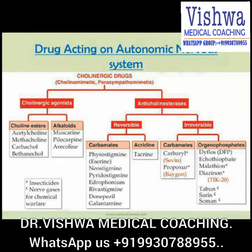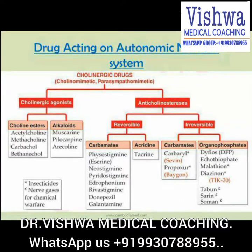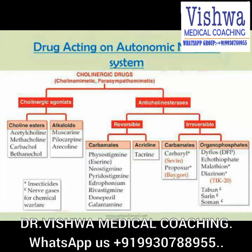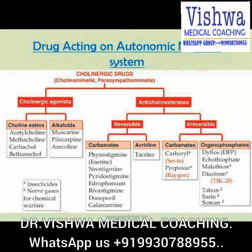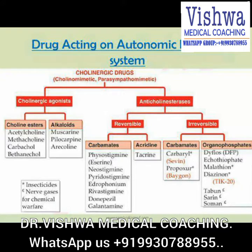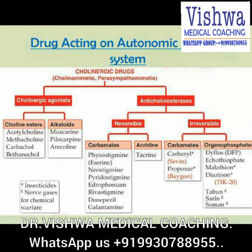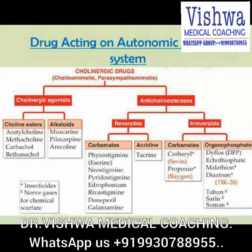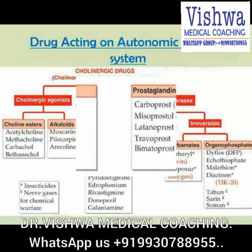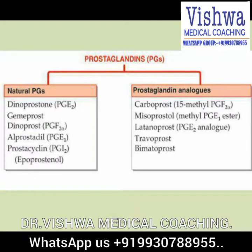Cholinergic drugs are used to produce parasympathomimetic action, which includes decreasing the heart rate, causing bronchospasm, and causing miosis — that is, constriction of the pupil. Examples include carbamate compounds and quaternary ammonium compounds.